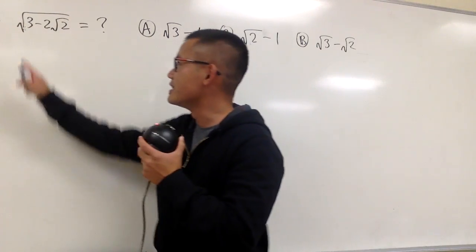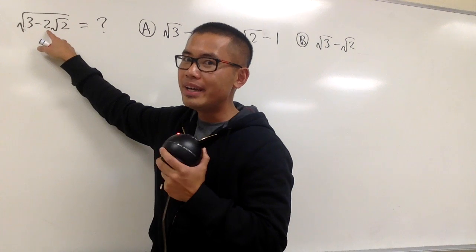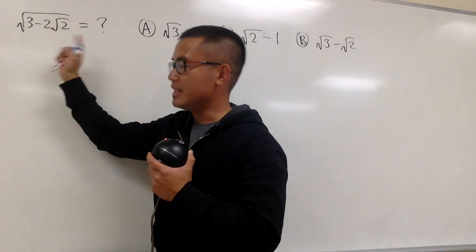Let's do some math for fun, and this time, as we can see, we have a square root on the outside, and then we have 3 minus 2, and then we have another square root inside. We have this square root of 2 right here.